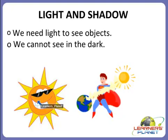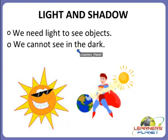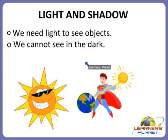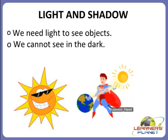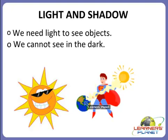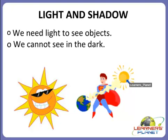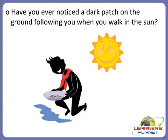But children, can we see in the dark? No. You can see in this picture — it is showing that the sun rays are falling on the earth, and the sun rays give us light to see the objects. We cannot see in the dark because there is no light in the dark.